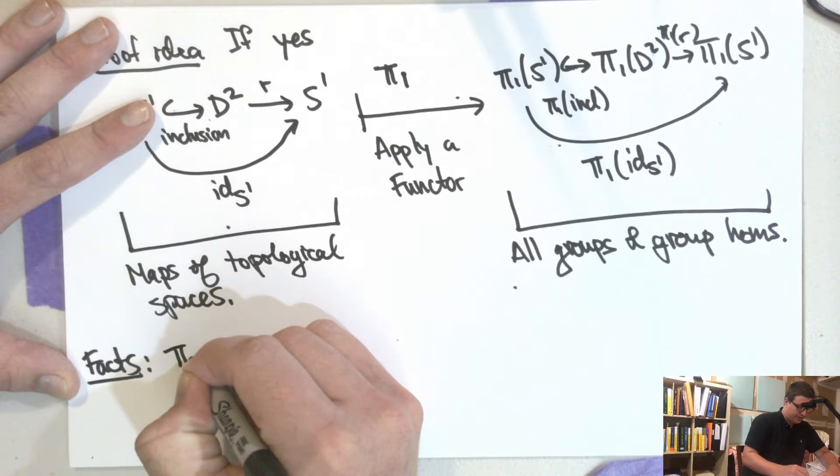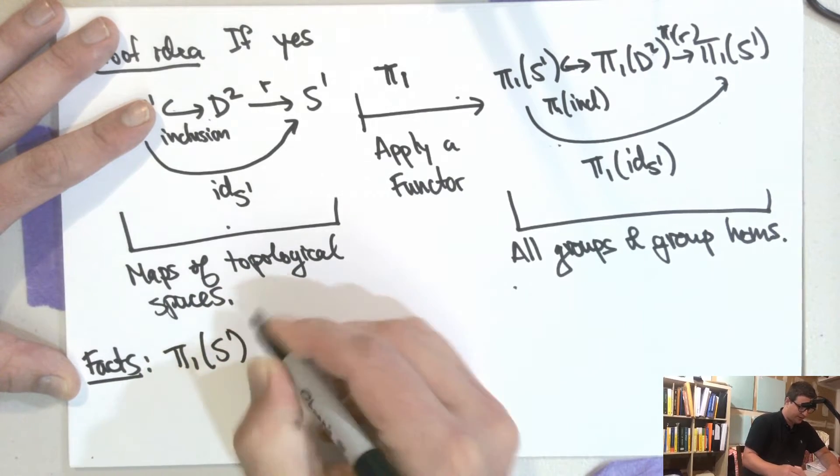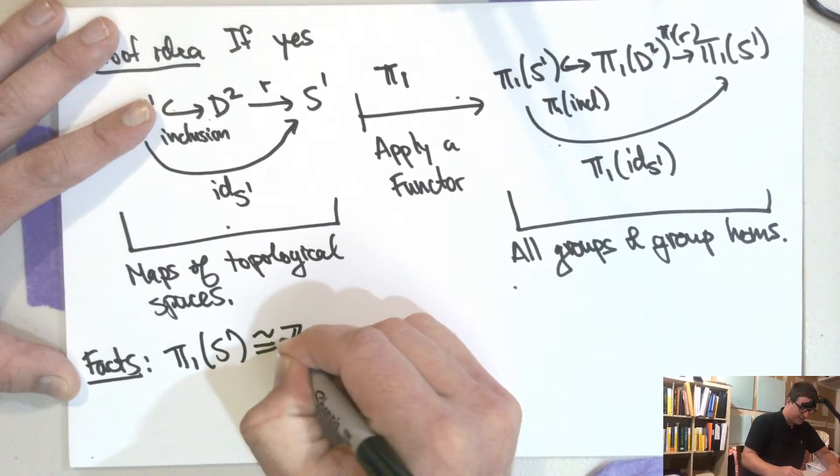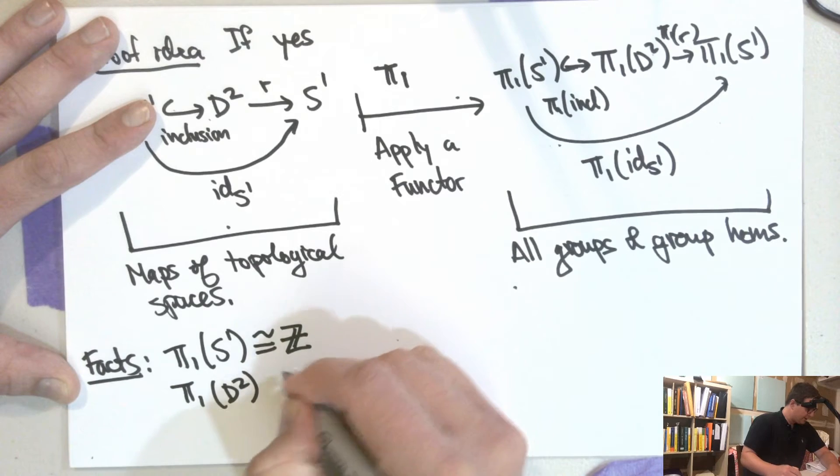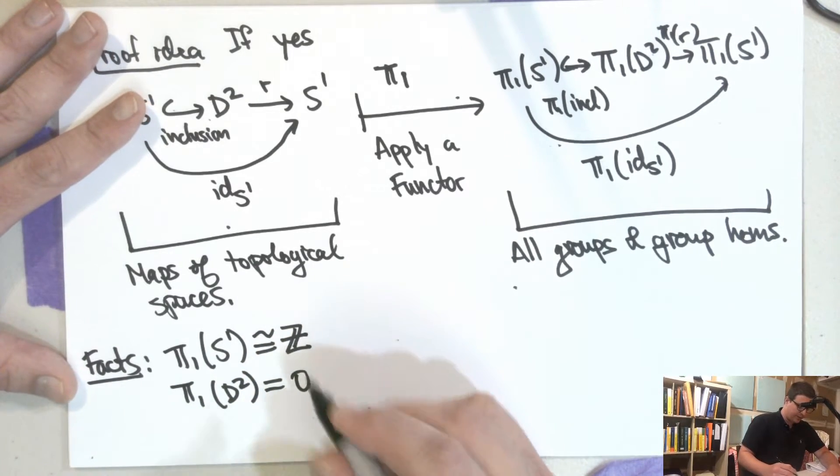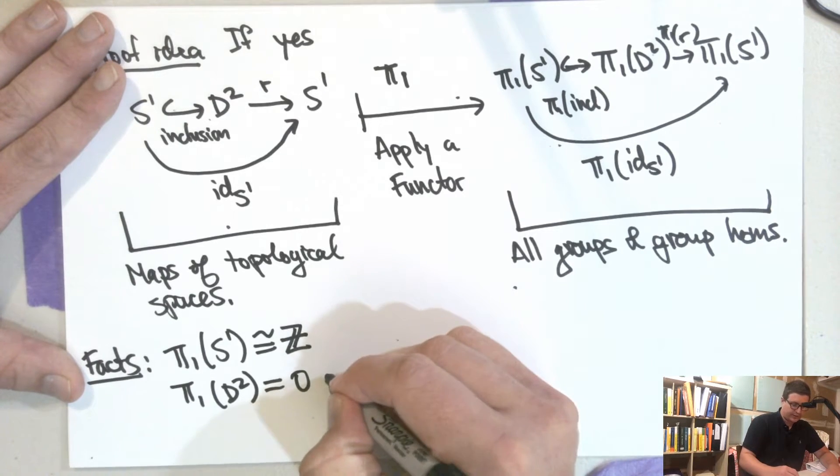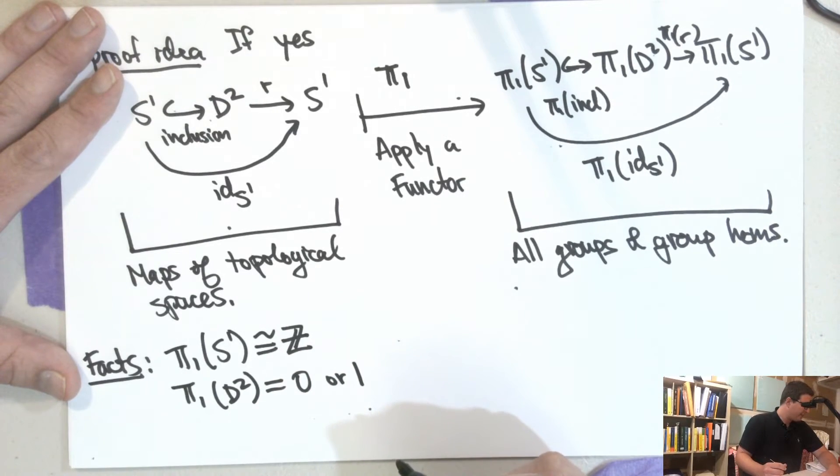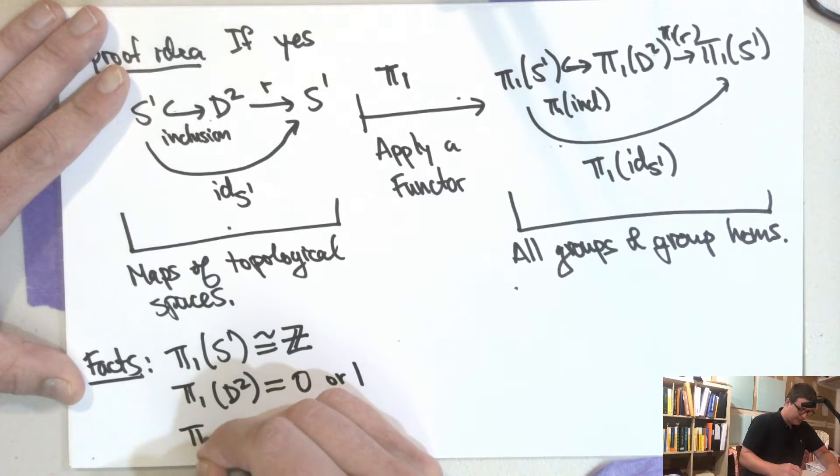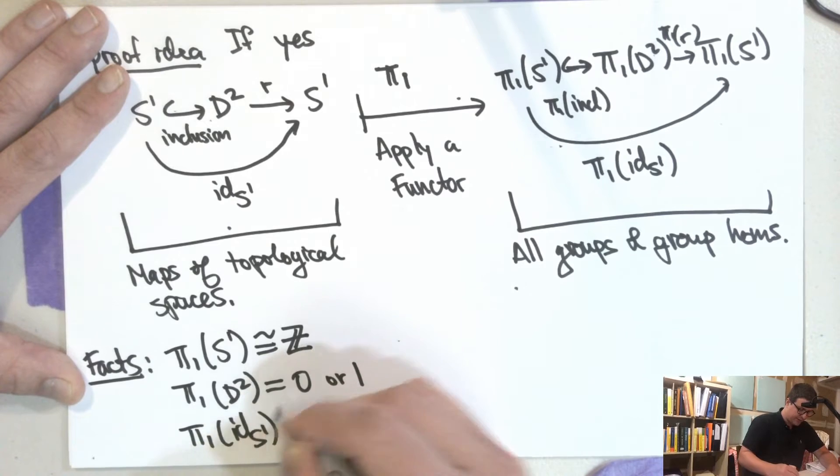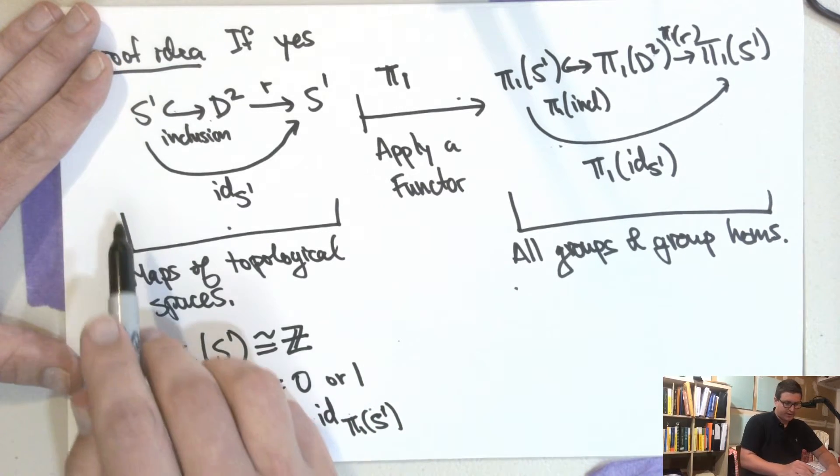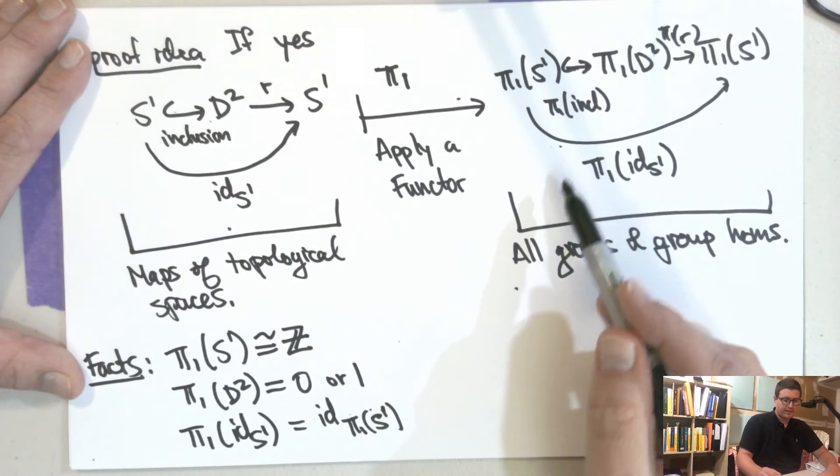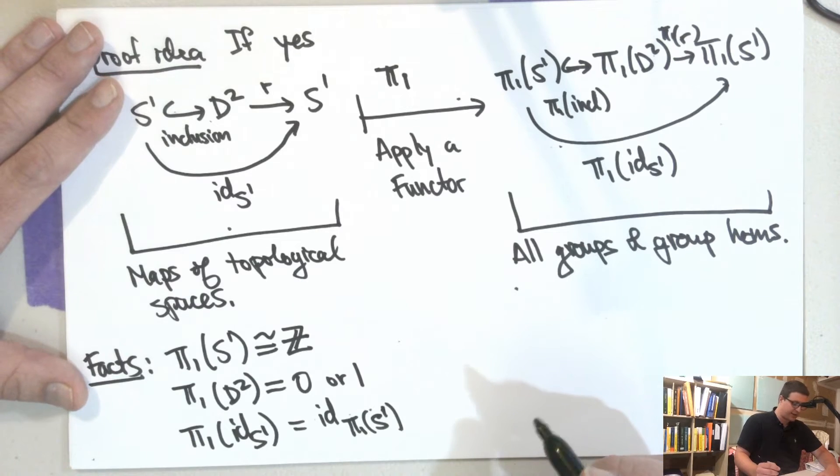And so the facts that we'll want is that π₁ of the circle here is isomorphic to, well, it's an infinite cyclic group. π₁ of D². So this is equal to zero, or one, depending on whether you want to write this additively or multiplicatively. And π₁ of the identity of S¹ is the identity of π₁ of S¹.